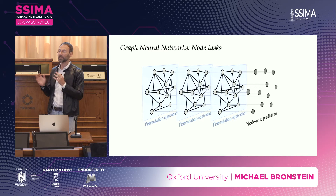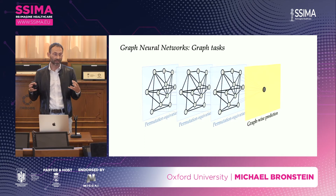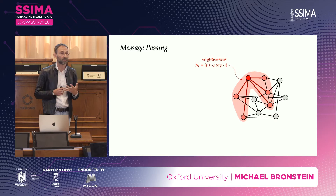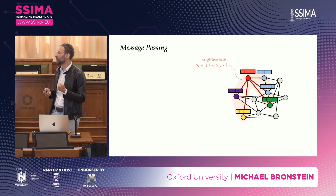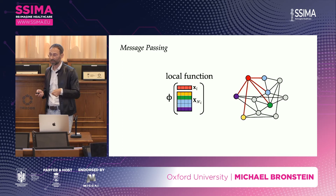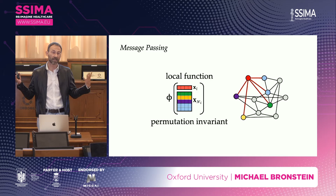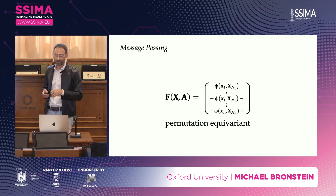Graph neural networks implement a sequence of permutation equivariant layers. The output can be either node-wise predictions or we can aggregate everything in a permutation invariant way to produce an output for the entire graph. The way functions on graphs are computed is typically through message passing: for every node, we look at its neighborhood, take the features of the neighbors, and aggregate them together with the feature vector of the node itself. The local aggregation function — which I denote by Phi — must be permutation invariant, since we have no canonical ordering of neighbors. Applying this to every node gives a permutation equivariant function, and the computation can be highly scalable.